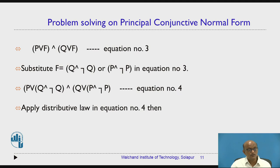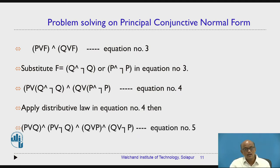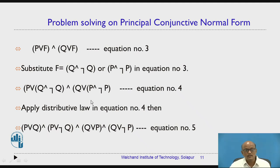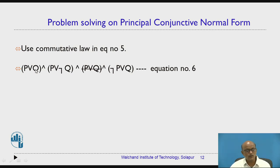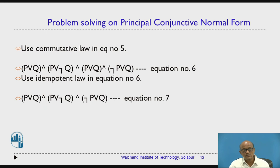Apply distributive law to equation number 4. The first term simplifies to two brackets: P or Q AND P or negation Q. The second term gives Q or P AND Q or negation P. Then apply commutative and idempotent laws. P or Q appears twice, and since P AND P equals P, one P or Q is retained. So finally only three terms remain: this is the required PCNF for problem number 2.